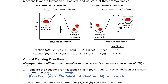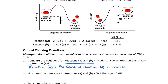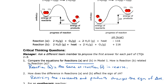Hopefully you looked at Reactions A and B — those are these here at the bottom — and you noticed that Reaction B is the reverse of Reaction A. So I wrote: Reaction B is the same as Reaction A in reverse. Critical thinking question number two: how does the difference in Reactions A and B affect the sign of delta H? My answer is: reversing the reactants and products changes the sign of delta H. You can see we change from a negative to a positive.